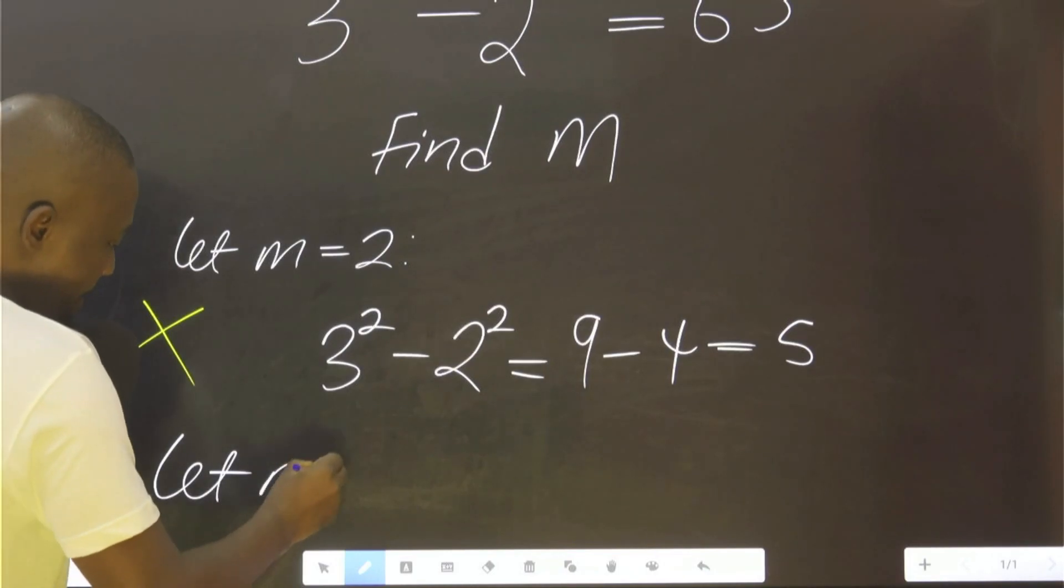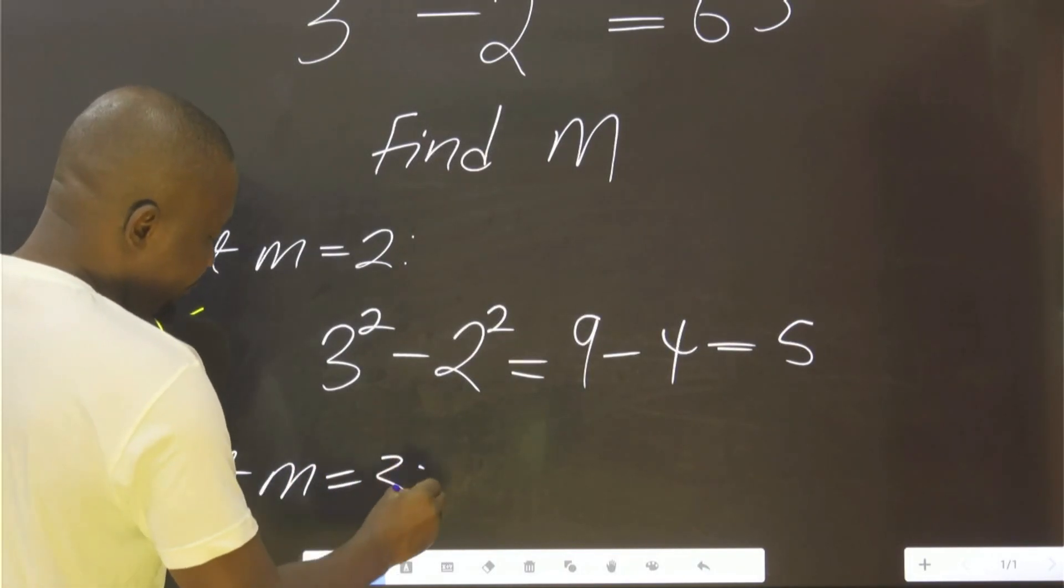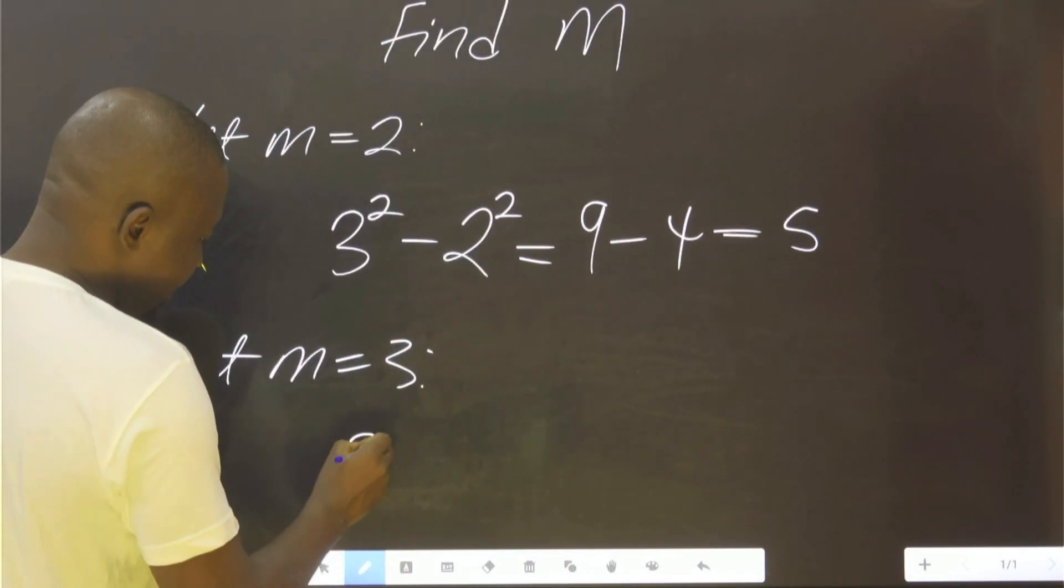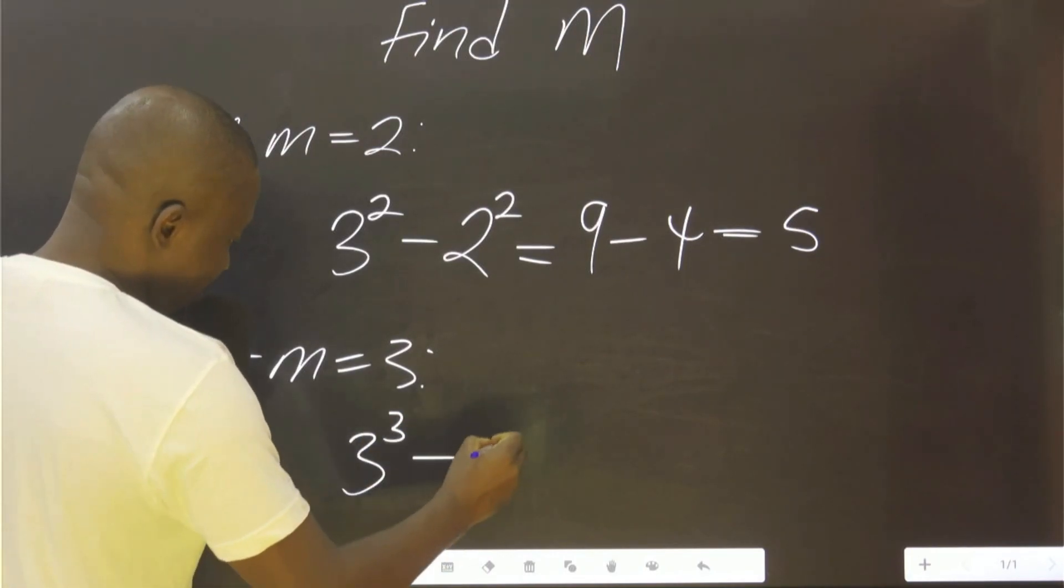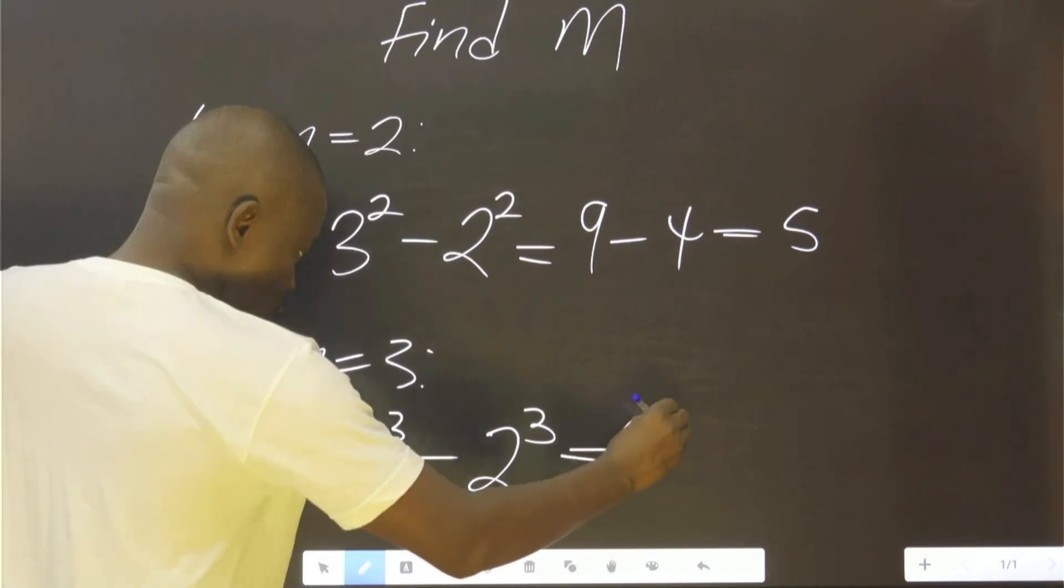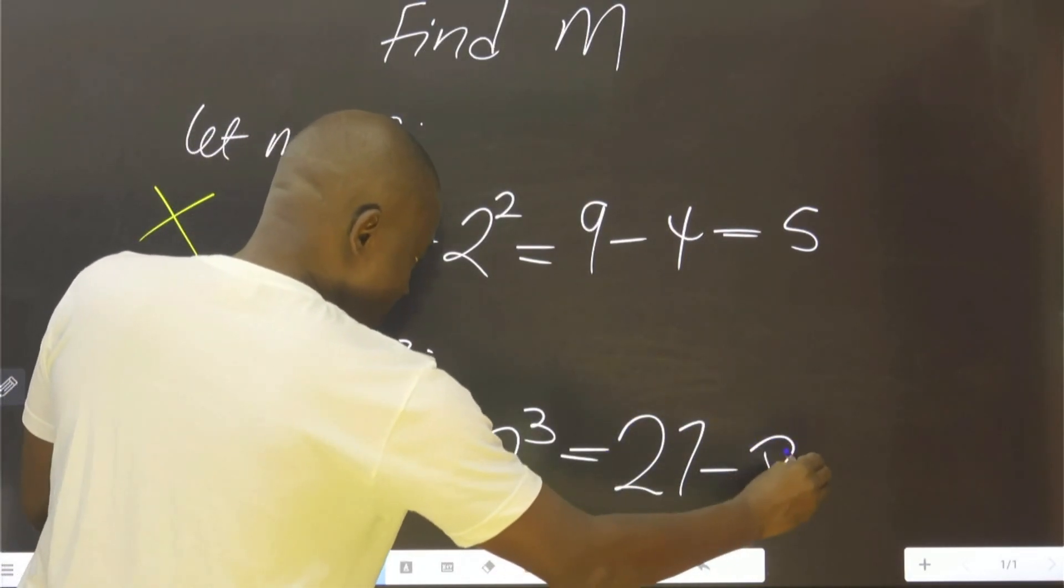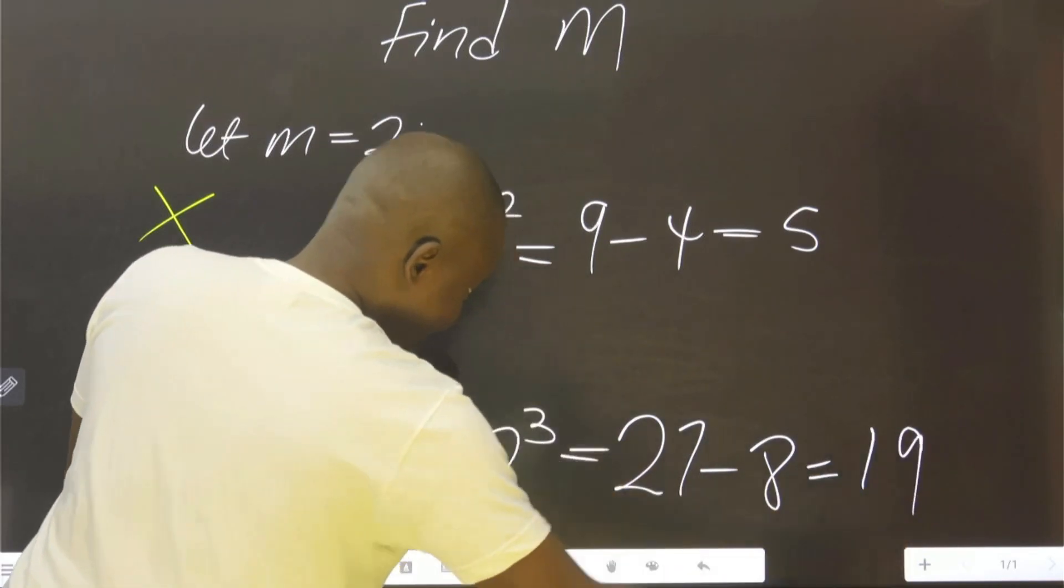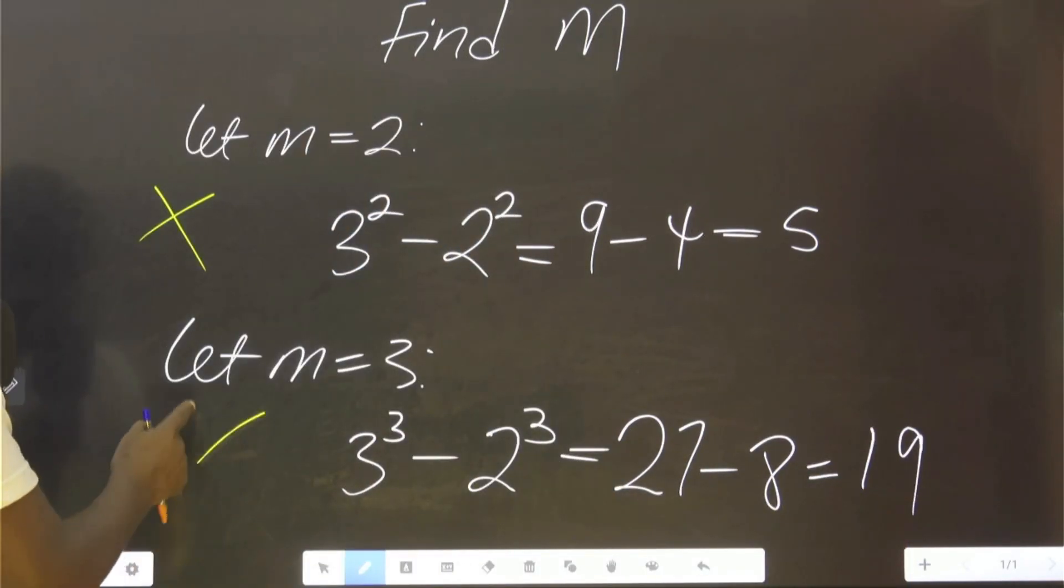Let m be 3. That is 3 raised to the power of 3 minus 2 raised to the power of 3. This is 27 minus 8, which equals 19. It's not 65. This cannot go.